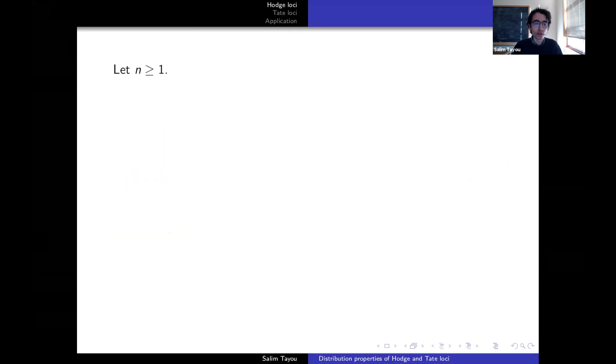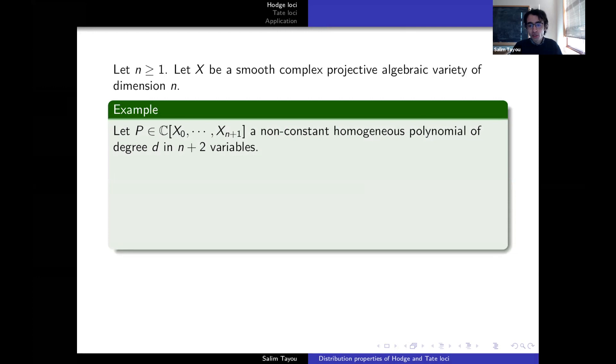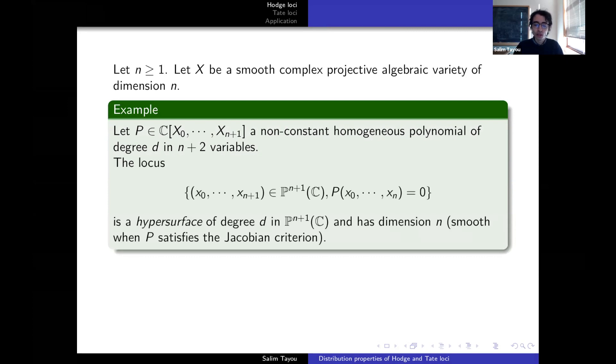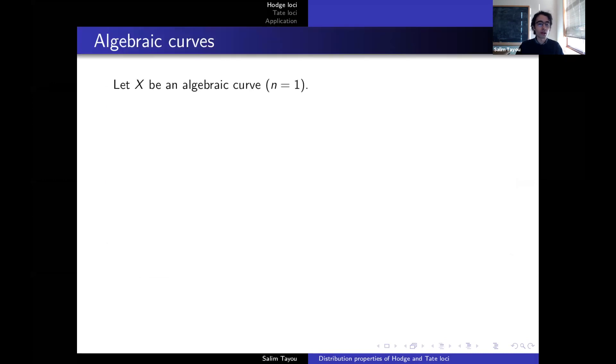Let's fix n an integer greater or equal than one, and let's take X a smooth projective algebraic variety of dimension n. Instead of defining what all these words mean, let me just give an example. For example, take a polynomial, a non-constant homogeneous polynomial of degree d in n plus two variables, and consider the locus where this polynomial vanishes in the projective space of dimension n plus one. This is what we call a hypersurface of degree d. It has dimension n. Smoothness is related to p satisfying the Jacobian criterion, which amounts to just being a complex manifold. And projective means properly embedded in a projective space. In this talk, I will be mostly interested in curves, so n equal one, or surfaces n equal two. For n equal three, let's just call them higher dimensional varieties, and I won't be talking about them a lot.